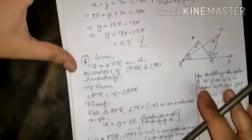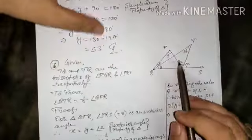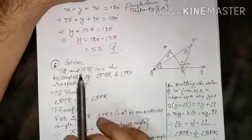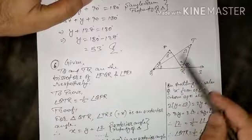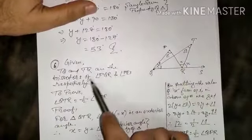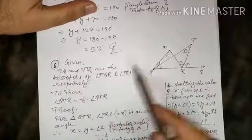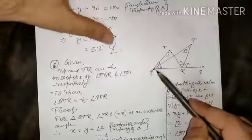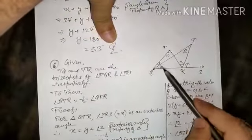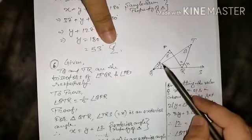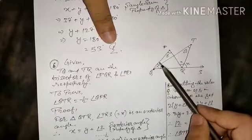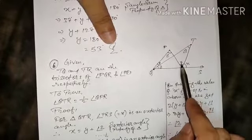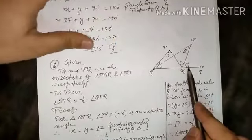Now let's move on to question number 6. Here is the figure from the question. The given information is that TQ and TR are the bisectors of angle PQR and angle PRS respectively. TQ is the bisector of PQR, which means this angle and this angle must be equal. So I assumed these two angles as Y, Y and these two angles as X, X.